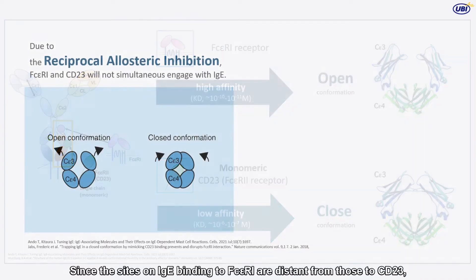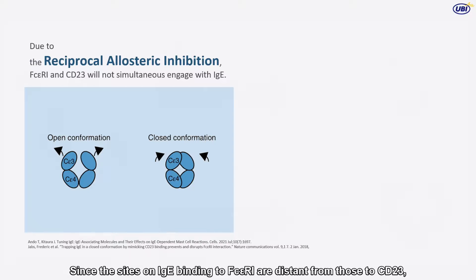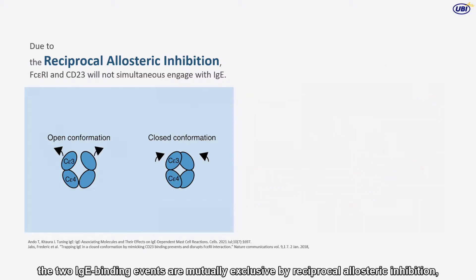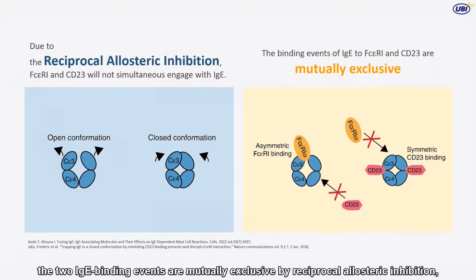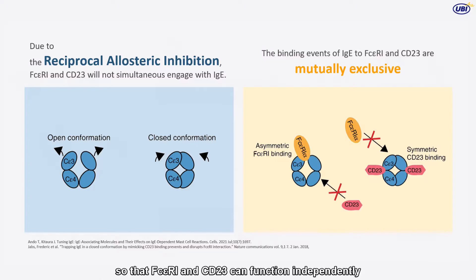Since the sites on IgE binding to FC-Epsilon-R1 are distant from those to CD-23, the two IgE binding events are mutually exclusive by reciprocal allosteric inhibition, so that FC-Epsilon-R1 and CD-23 can function independently without simultaneous engagement with IgE.